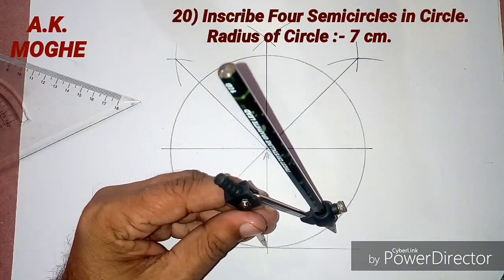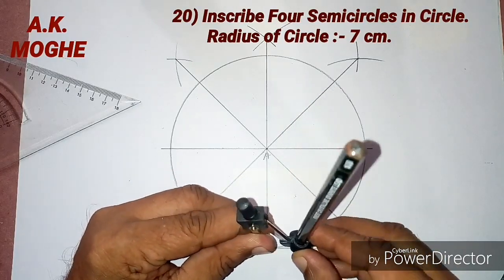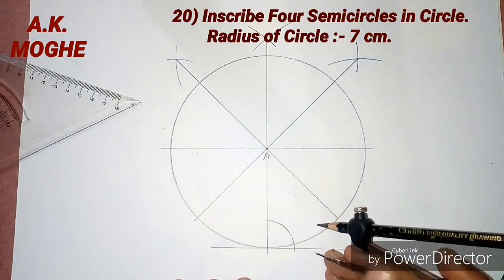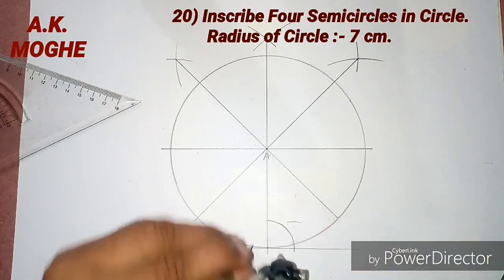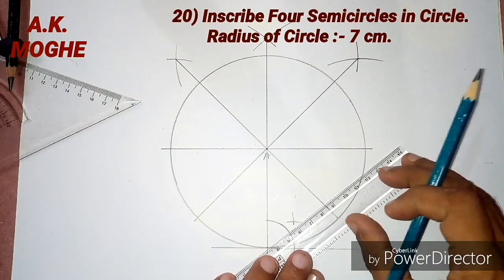Now we need an angle bisector at any one diameter of that circle. And we need to bisect that angle into 2 equal parts. So we are bisecting the bottom diameter into 2 equal parts.